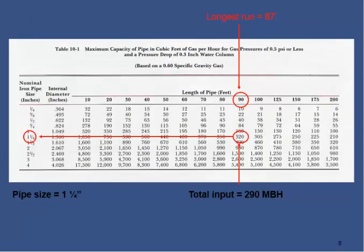To start with the sizing, we refer to this column giving the length of the pipes with intervals of roughly 10 feet. Ours being 87, which falls between 80 and 90, and our demand is about 290 MBH. Between here and here, when we refer to this, this will become the pipe diameter. The starting point from the gas meter outlet, our pipe size will be 1¼ inch.